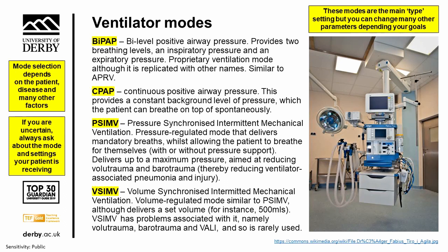Some of the most common modes include BiPAP, where we have in effect two levels — a higher level and a lower level — and the ventilator will cycle between those two modes. CPAP, or continuous positive airway pressure, provides a continuous background level of pressure and the patient can breathe spontaneously on top of that. If they don't breathe, it may not give them a breath, but if they do, we can give it an extra push and extra help — and that's really good for weaning.